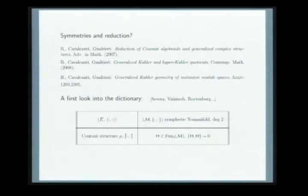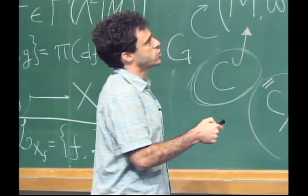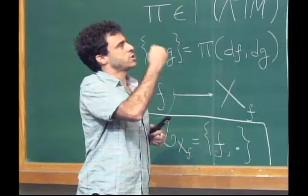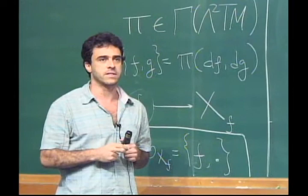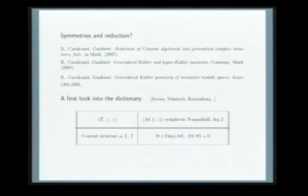This may seem like a very complicated way to express something simple, but once you do that, the trade-off appears: the complicated additional stuff — the funny bracket and anchor — just become a function on this space satisfying one condition: the function bracket with itself is zero. This condition is completely trivial in ordinary symplectic geometry because the bracket is skew-symmetric, but in the graded world, a function bracket with itself being zero is very non-trivial — it's called the master equation in physics, one of the most important equations in physics.